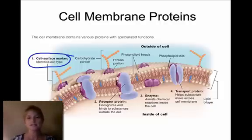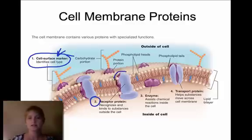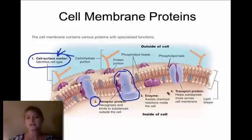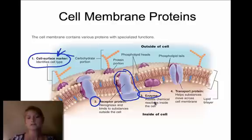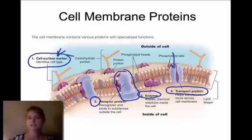Since cells work together, they need to communicate with each other, and the cell surface marker communicates what type of cell it is. The next one is a receptor protein, which does exactly what it sounds like — it receives things. It recognizes a substance, binds to it on the outside, and brings it in if appropriate — like a receptionist that evaluates first. Next is an enzyme; we've talked about how important enzymes are to chemical reactions in cells, and there are enzymes on the cell membrane. Finally, a transport protein transports things either into the cell or out of the cell through that gap.